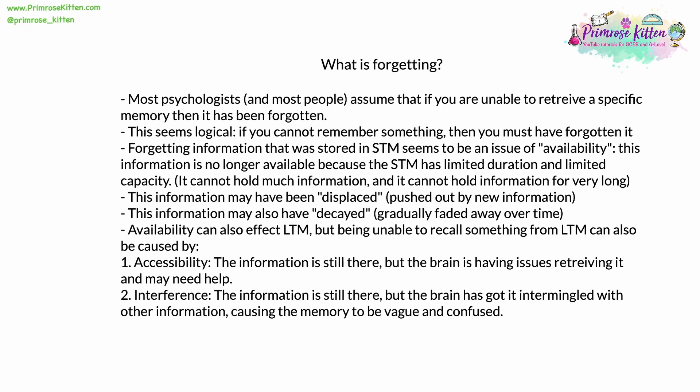Availability is an issue that can also affect our long-term memories. But being unable to recall something from LTM can also be caused by a couple of other issues. The first is accessibility — when the information is still present in long-term memory but the brain has issues retrieving it; it may need a cue or trigger. Interference is the second problem: the information is still there but the brain has it intermingled and confused with other information, causing the memory to be vague, confusing, and half-remembered.